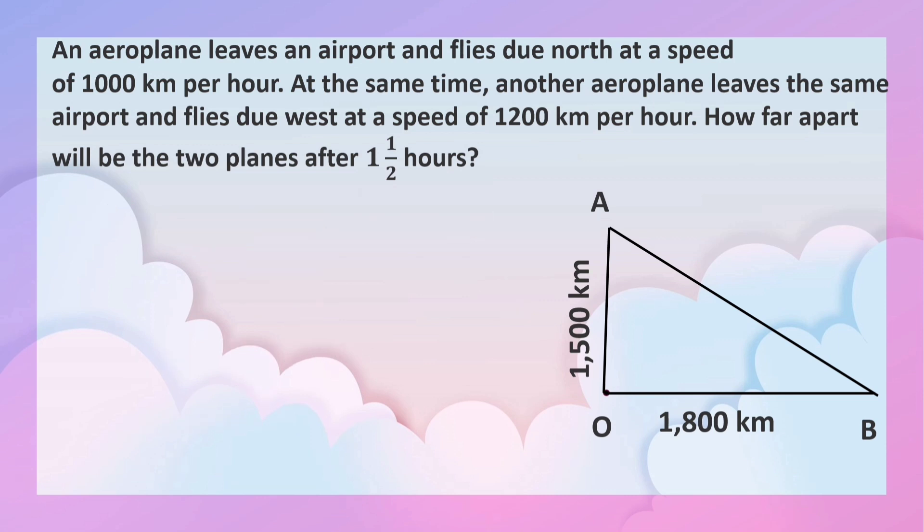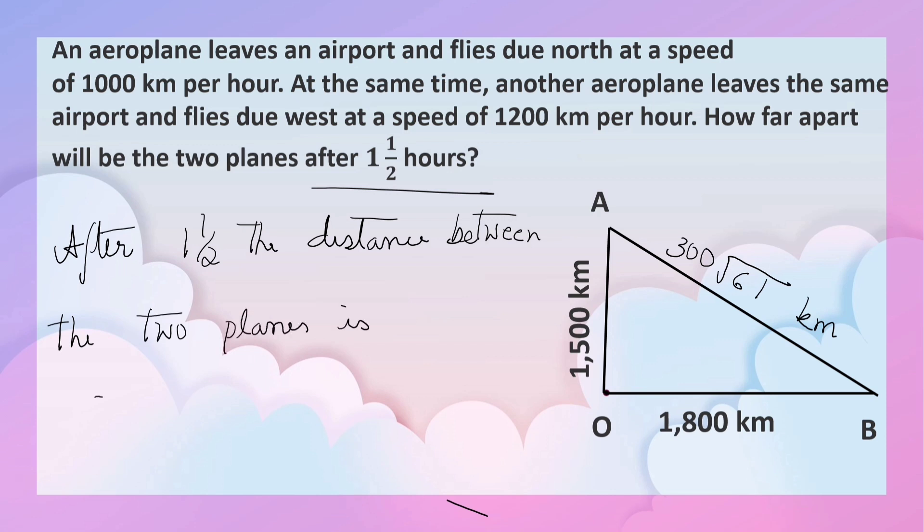So the distance between AB is 300 root 61 kilometers. After one and a half hours, the distance between the two planes is 300 root 61 kilometers.